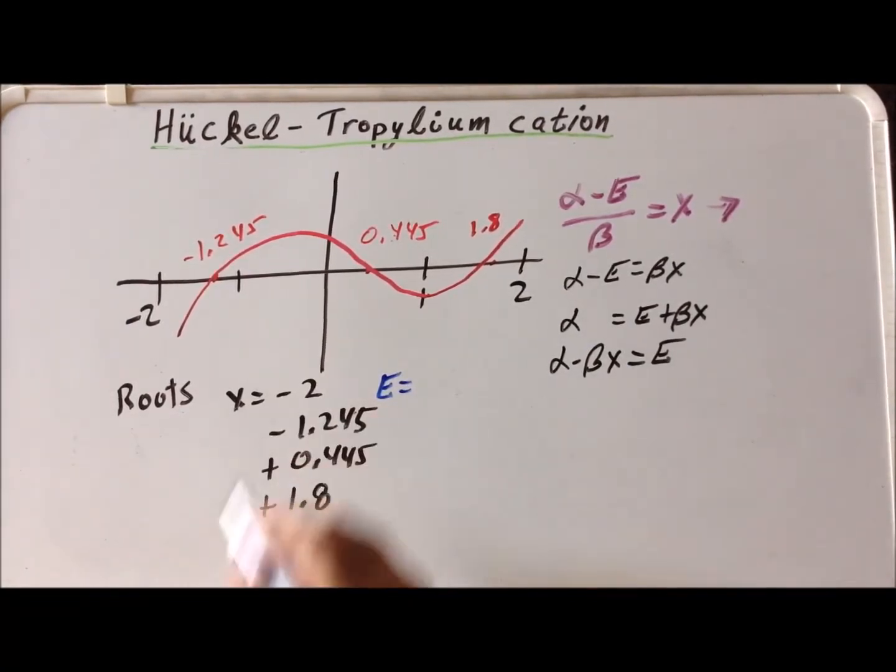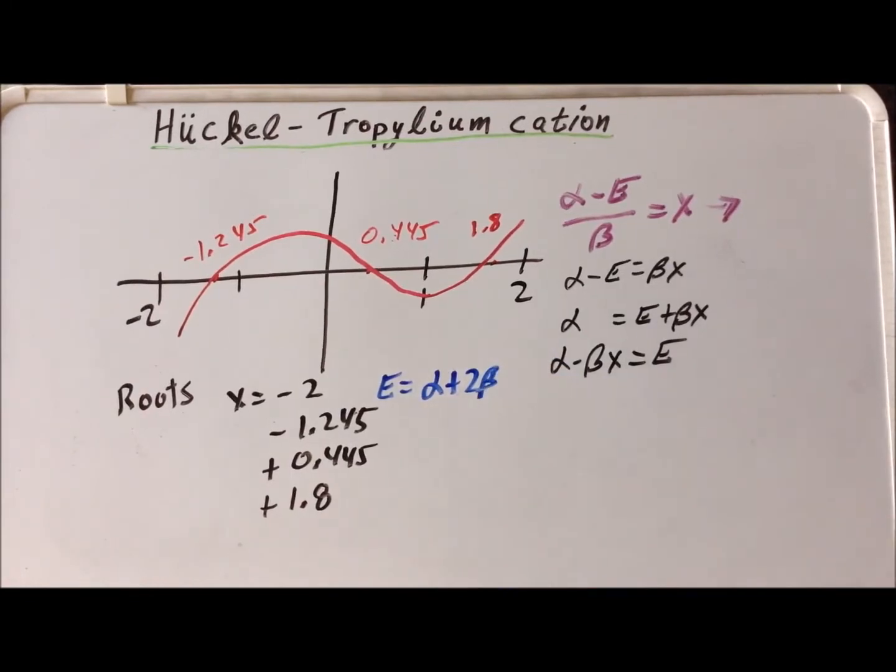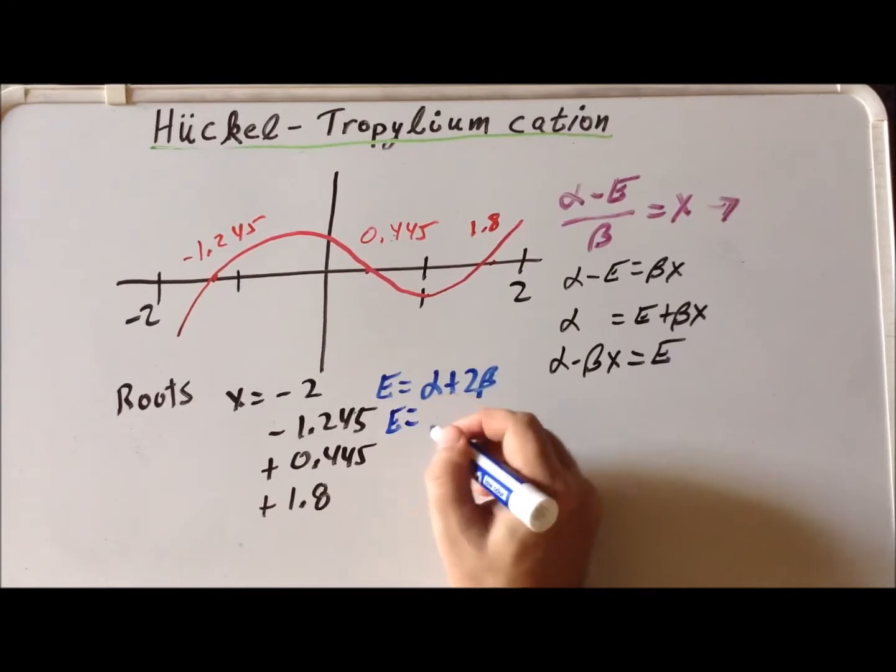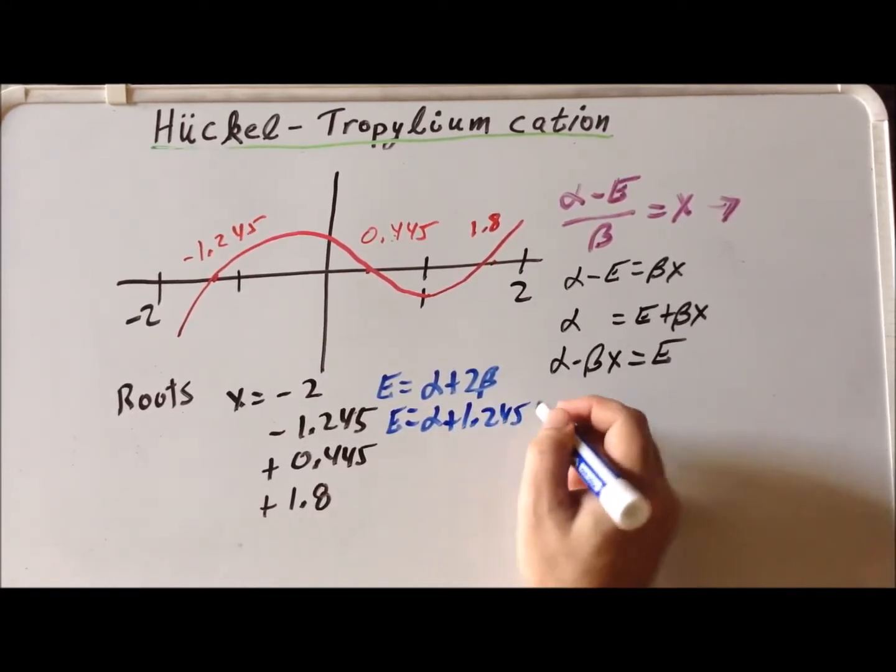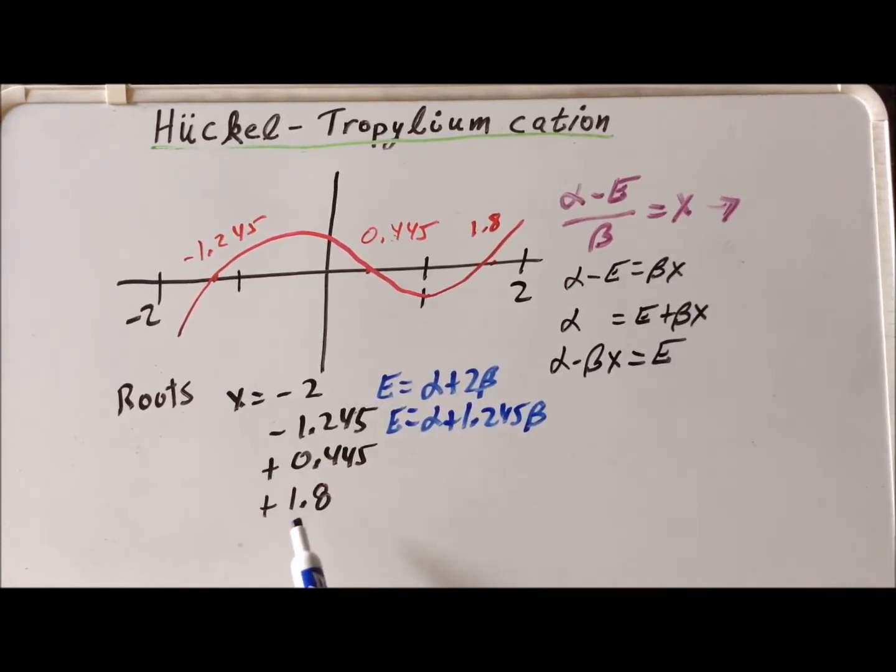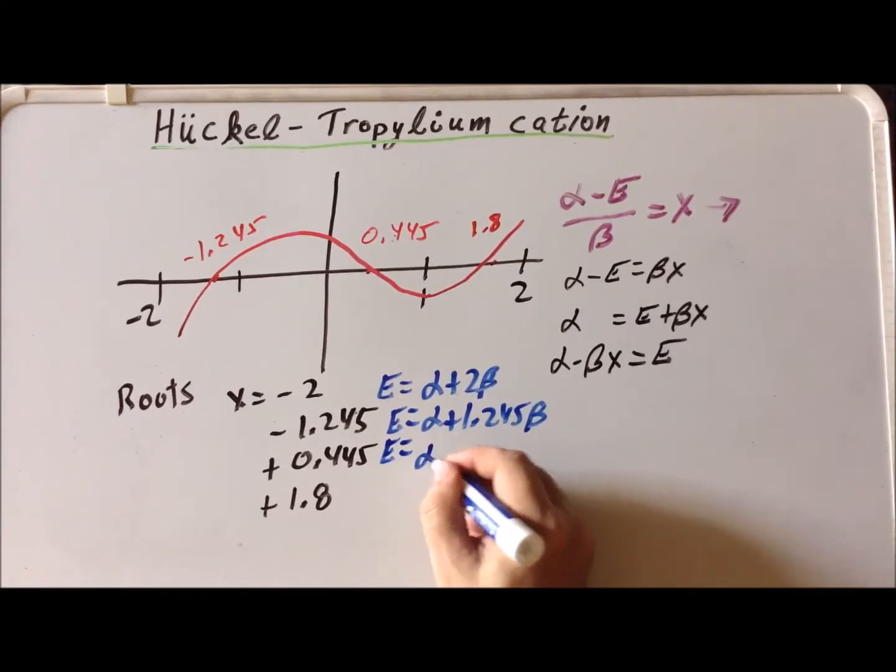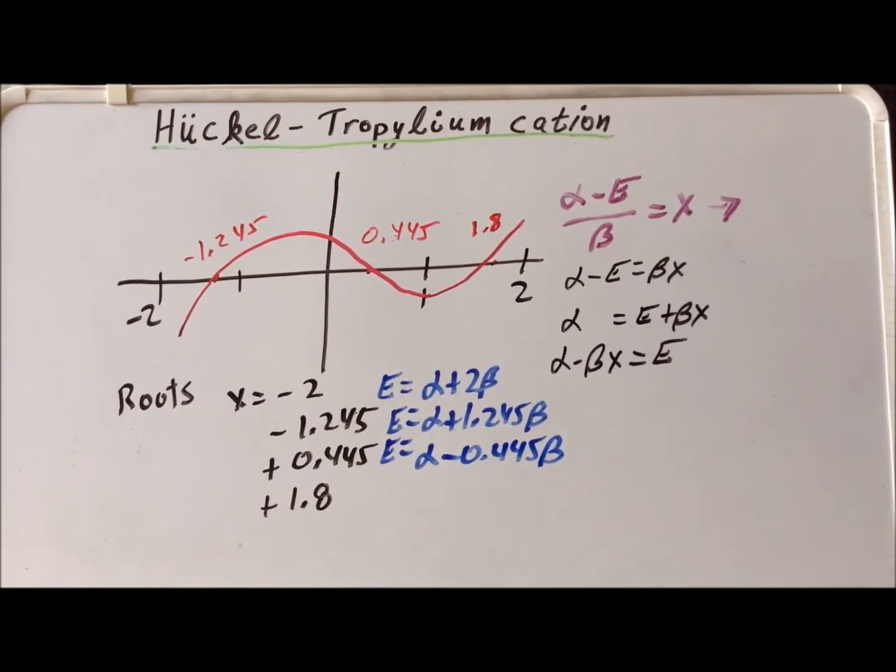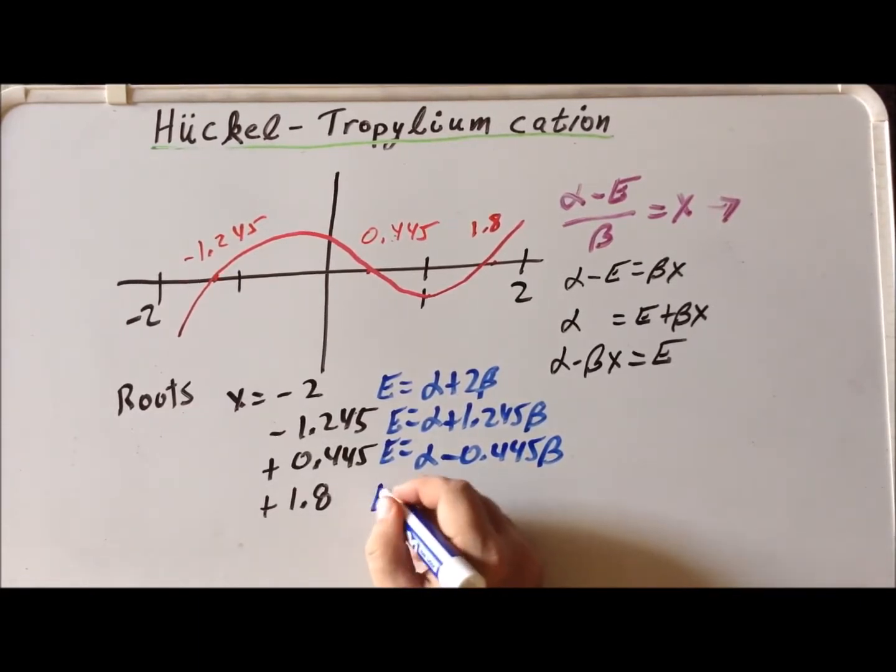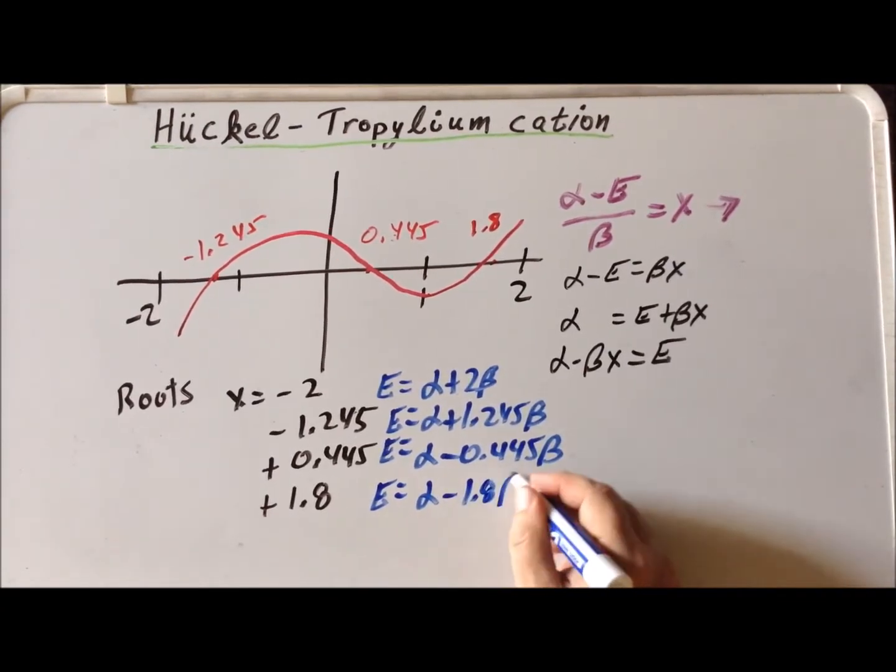So we can write these down immediately what the energies are going to be. So the energy here is, if you have a root of minus 2, this is going to be alpha plus 2 times beta. For minus 1.245, the energy is going to be alpha plus 1.245 times beta. If the root is plus 0.445, the energy is going to be alpha minus 0.445 times beta. And then the last doubly degenerate root, energy is going to be alpha minus 1.8 beta.